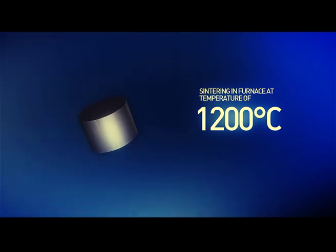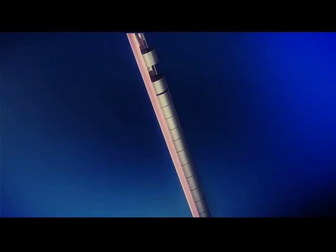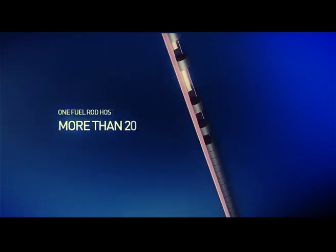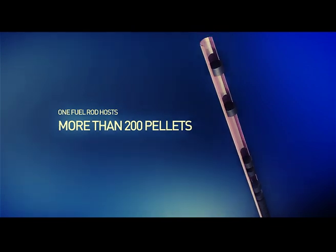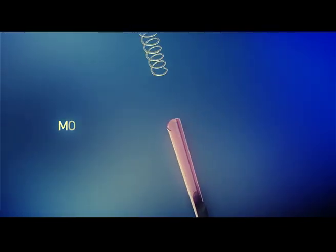Pellets are placed in zirconium tubes, which serve as cladding for the fuel rods. The charging machine places more than 200 pellets into one fuel rod. Having charged the zirconium tube with pellets, the robot installs a pressure spring, pumps out the air, and seals the tube.